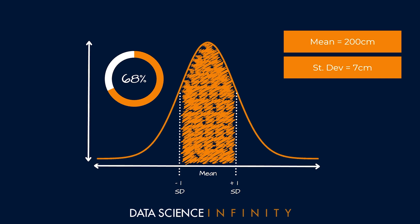So we can say, according to this distribution at least, 68% of players in the NBA are between 193 centimeters and 207 centimeters. And remember,